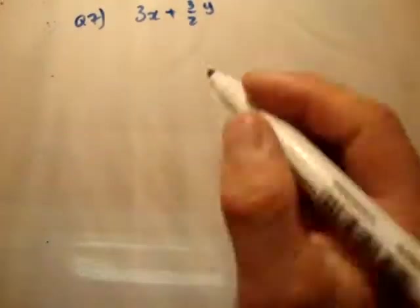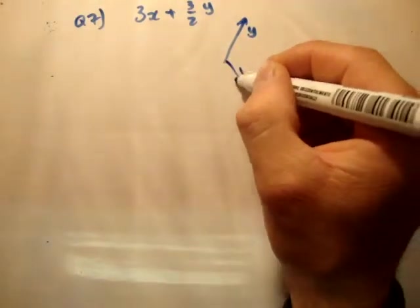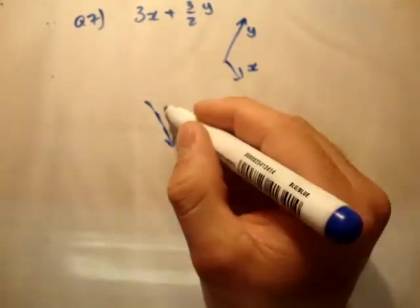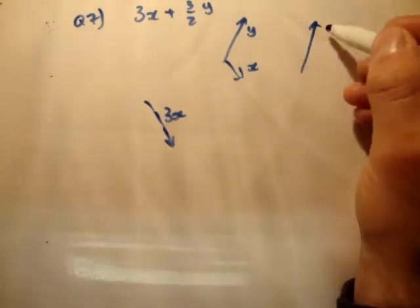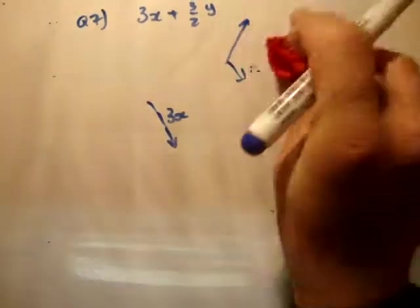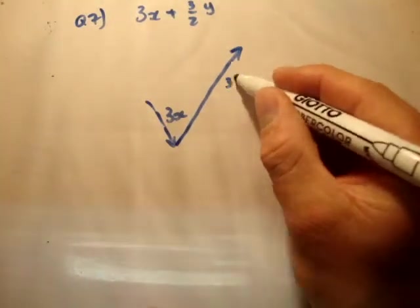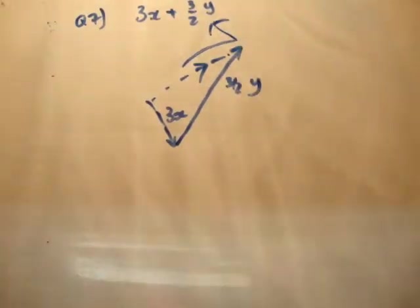This is also part of question 6: construct 3X plus 3 over 2 Y. You're given Y and X. So 3X would be 1, 2, 3X. And 3 over 2 Y is one and a half times Y. Draw 3X, then place 3 over 2 Y, and draw your resultant vector.